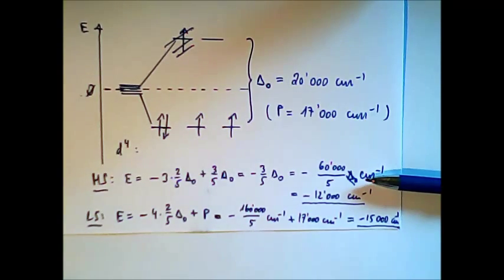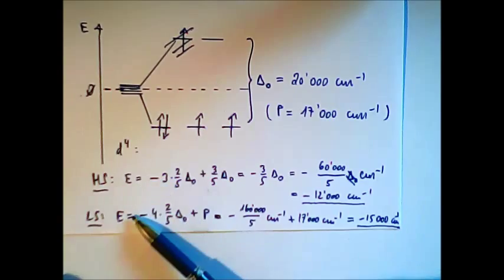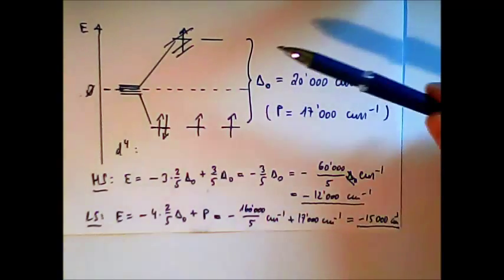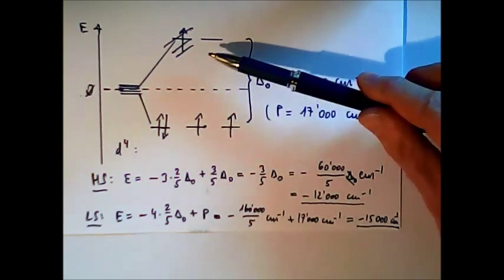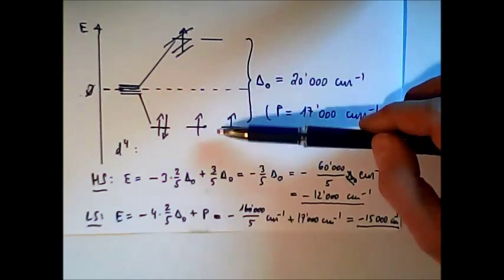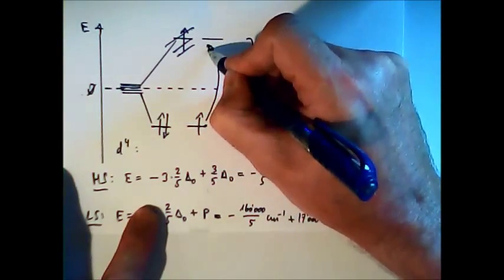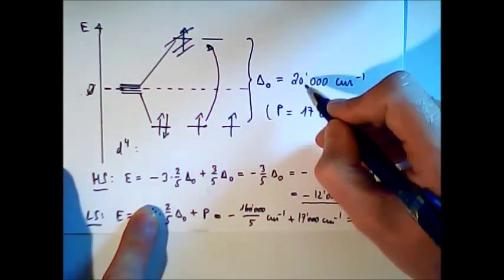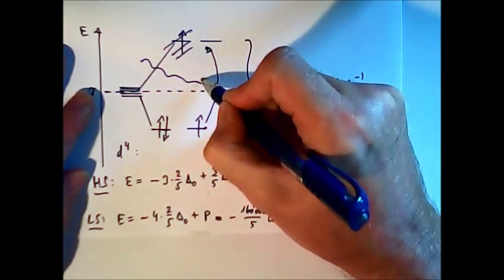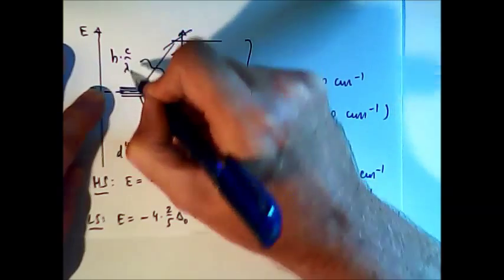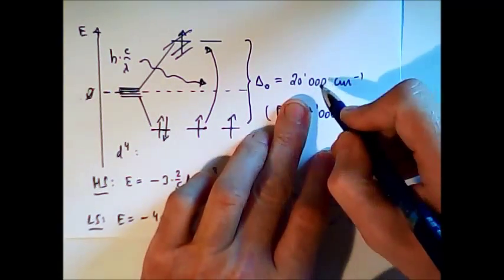Now I want you not to confuse the crystal field stabilization energy for all electrons with the energy of the light that is absorbed. The energy absorbed by putting one electron from the lower level to the upper level is the same for both low spin and high spin — the delta-O is the same. So when we talk about energy absorbed, we talk about the energy needed to bring one electron up, which corresponds to the 20,000 cm⁻¹.